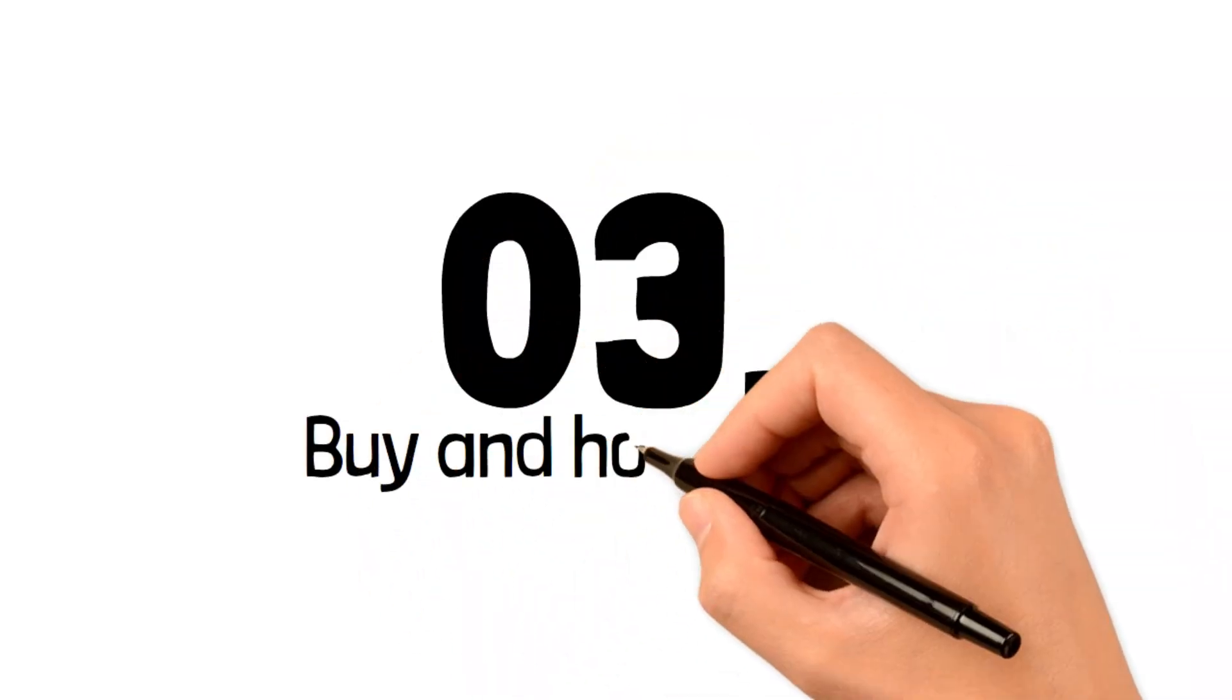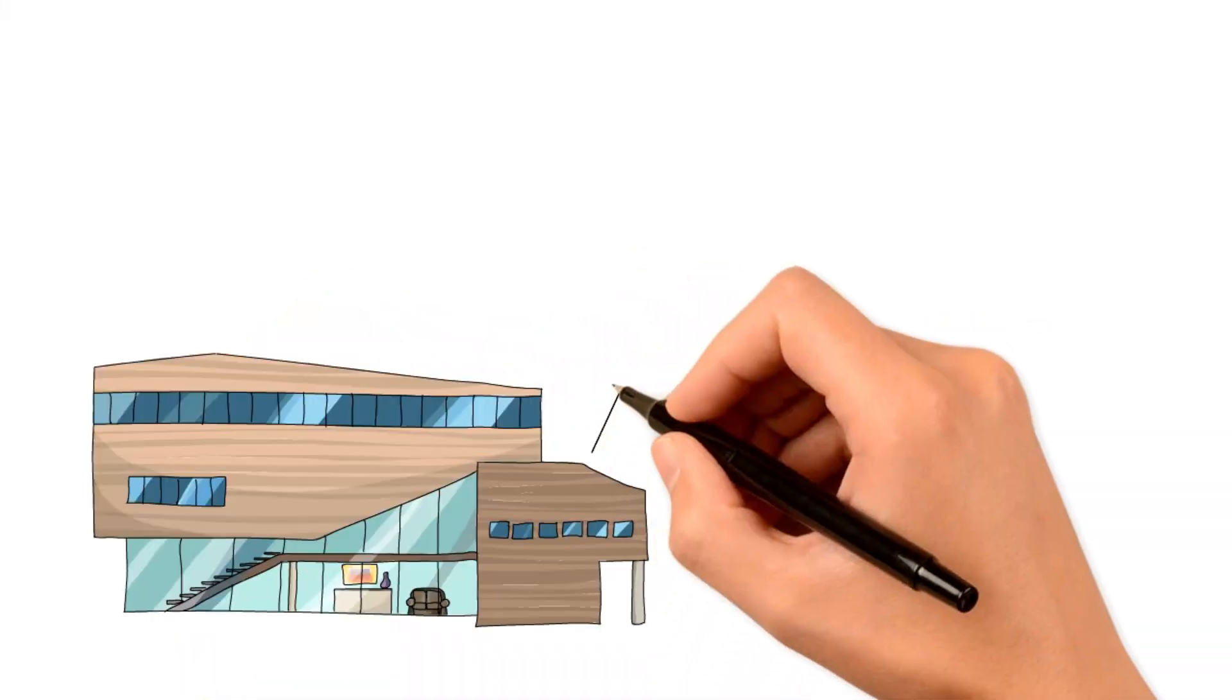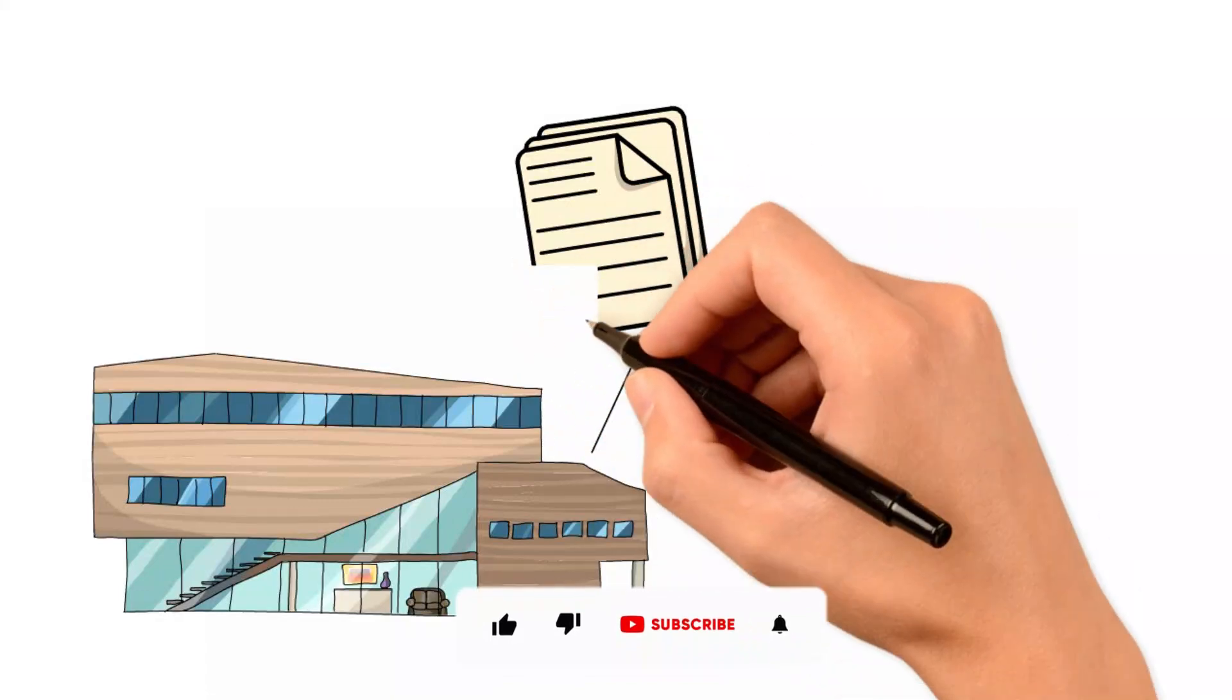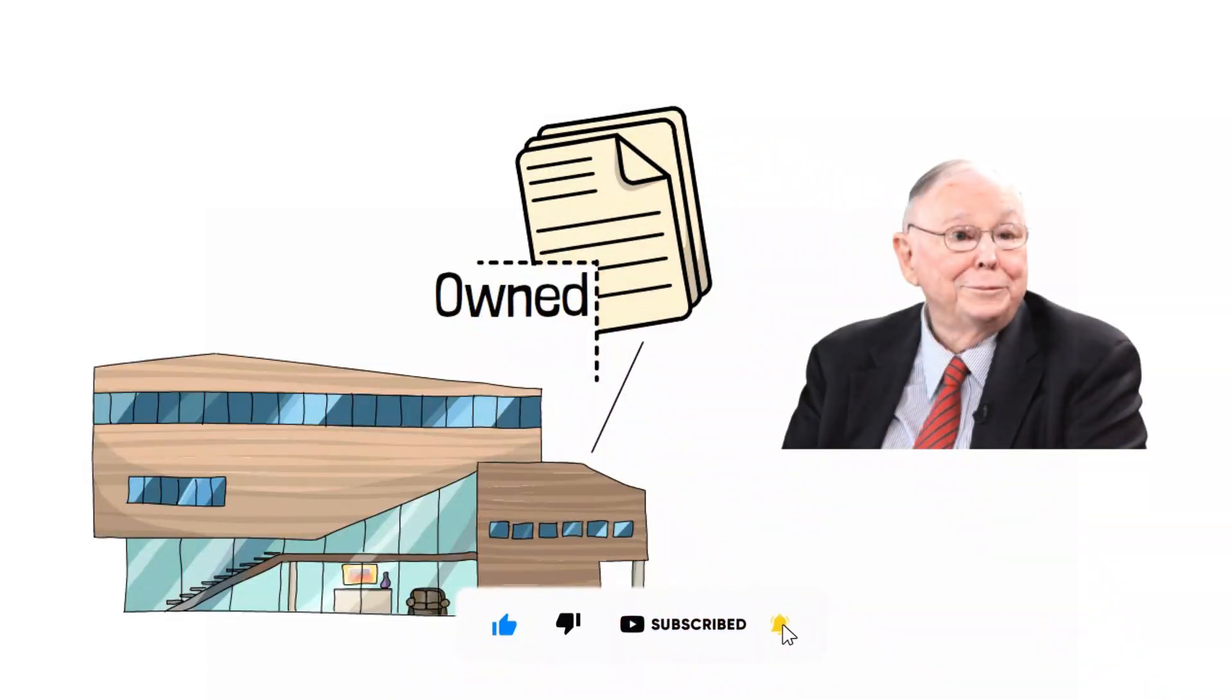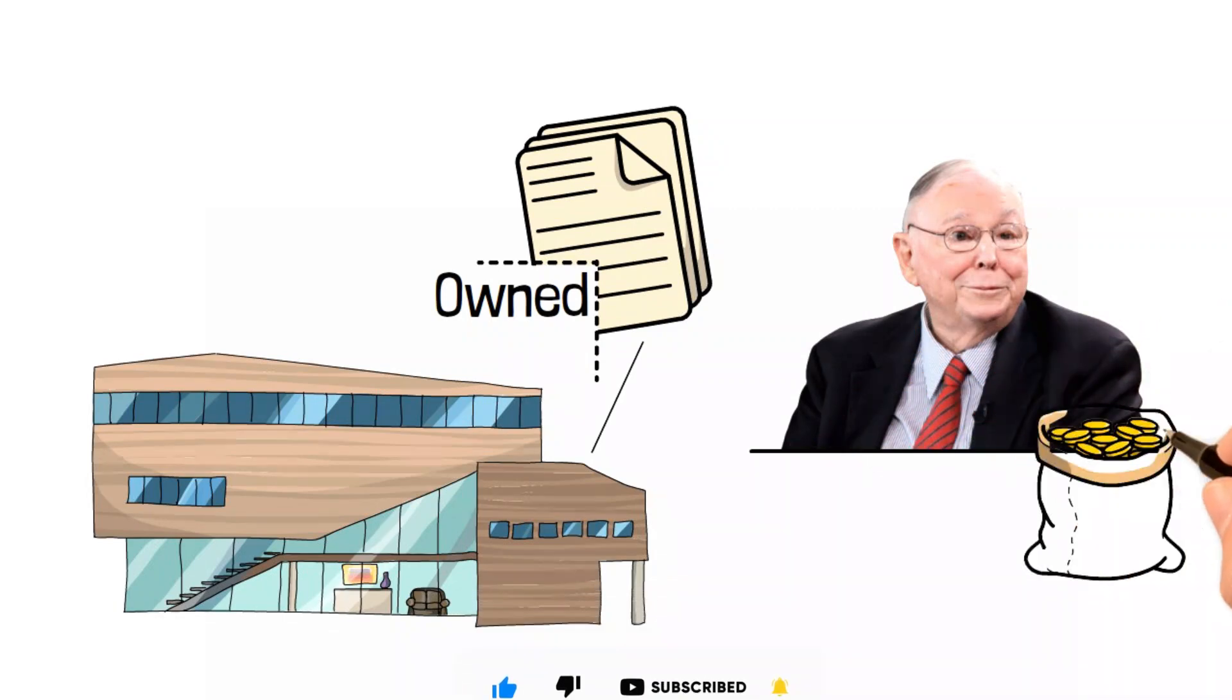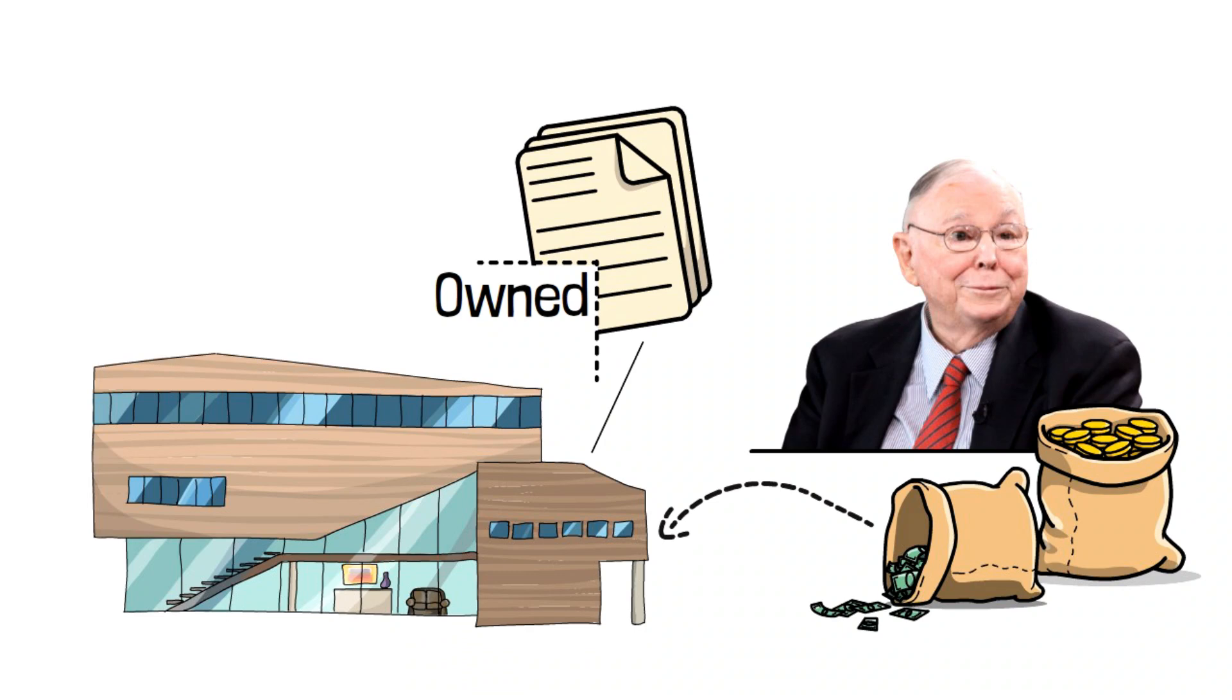Step three, buy and hold equity. Now, the third step to attaining wealth is owning equity. This idea is to own a piece of the market and let it grow. Let me explain. Charlie has invested most of his multi-billion dollar wealth in just one company, Berkshire Hathaway.